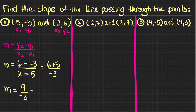So m is equal to 9 divided by negative 3. 9 divided by 3 is 3, and a positive divided by a negative is a negative, so my slope is equal to negative 3 for the first problem.